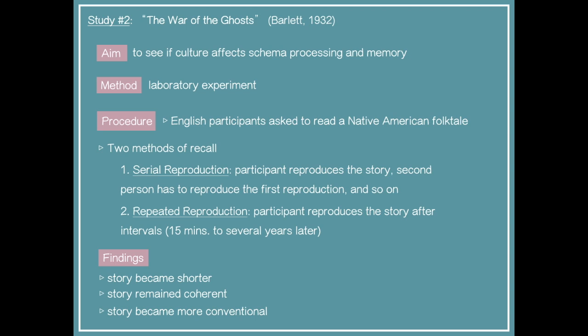English participants were asked to read a Native American folktale. English people and Native Americans obviously have different backgrounds. The Native American folktale involved things like seal hunting, which English participants are not used to. Two methods of recall were used: serial reproduction — like the telephone game, where each participant reproduces the story and passes it on through six to seven reproductions — and repeated reproduction, where one participant reproduces the story after time intervals ranging from 15 minutes to several years.